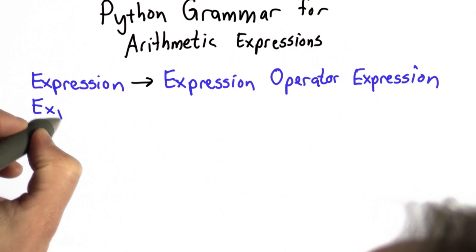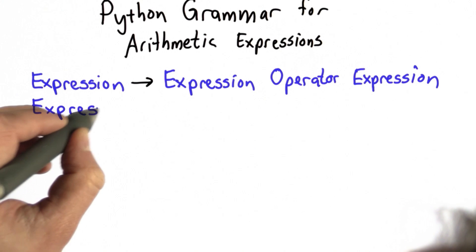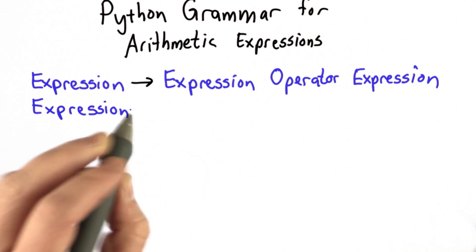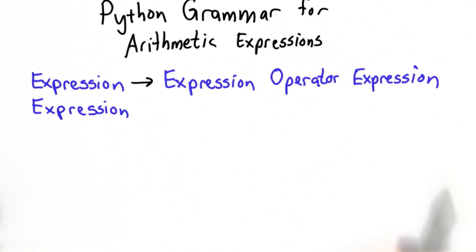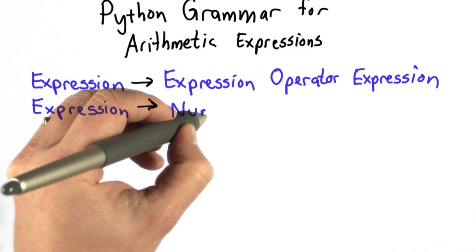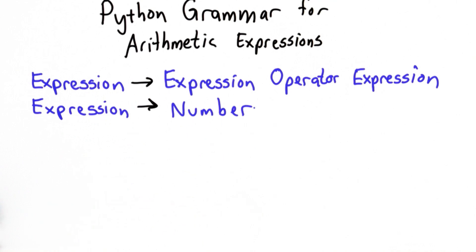For now, we're going to see how we can use that to make the Python grammar. To make a good recursive definition, we need at least two rules. We need one where we can keep going using the same thing on the right side as the left side, and we need one where we can stop.